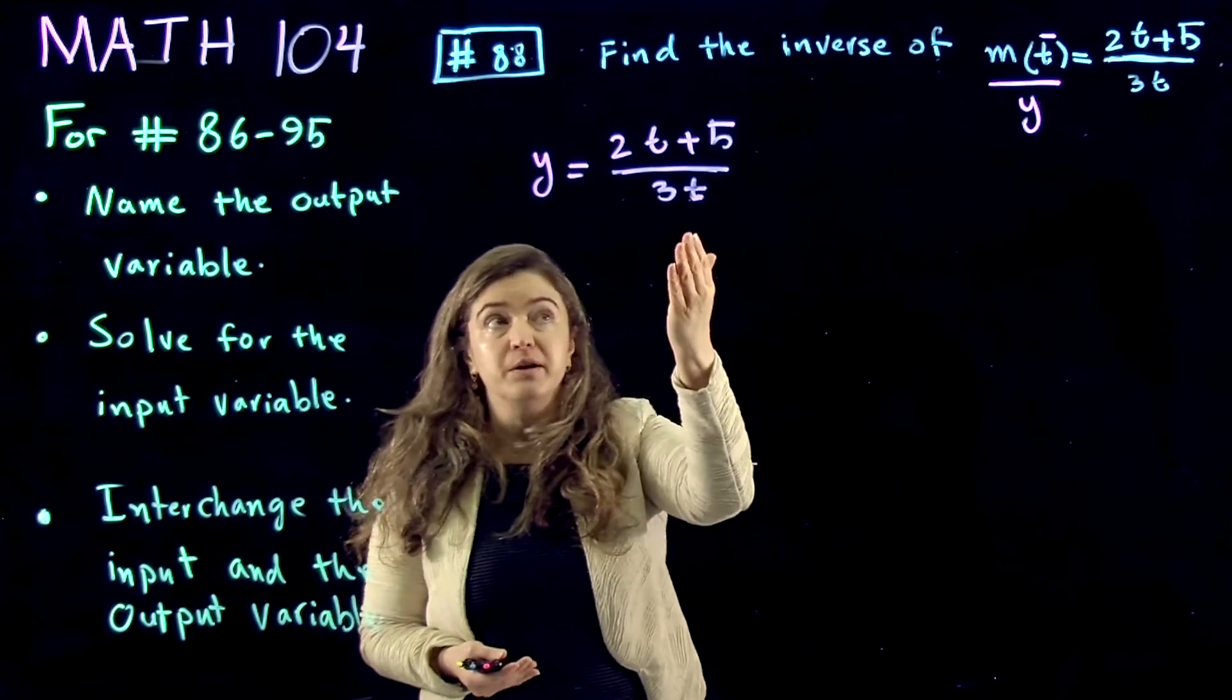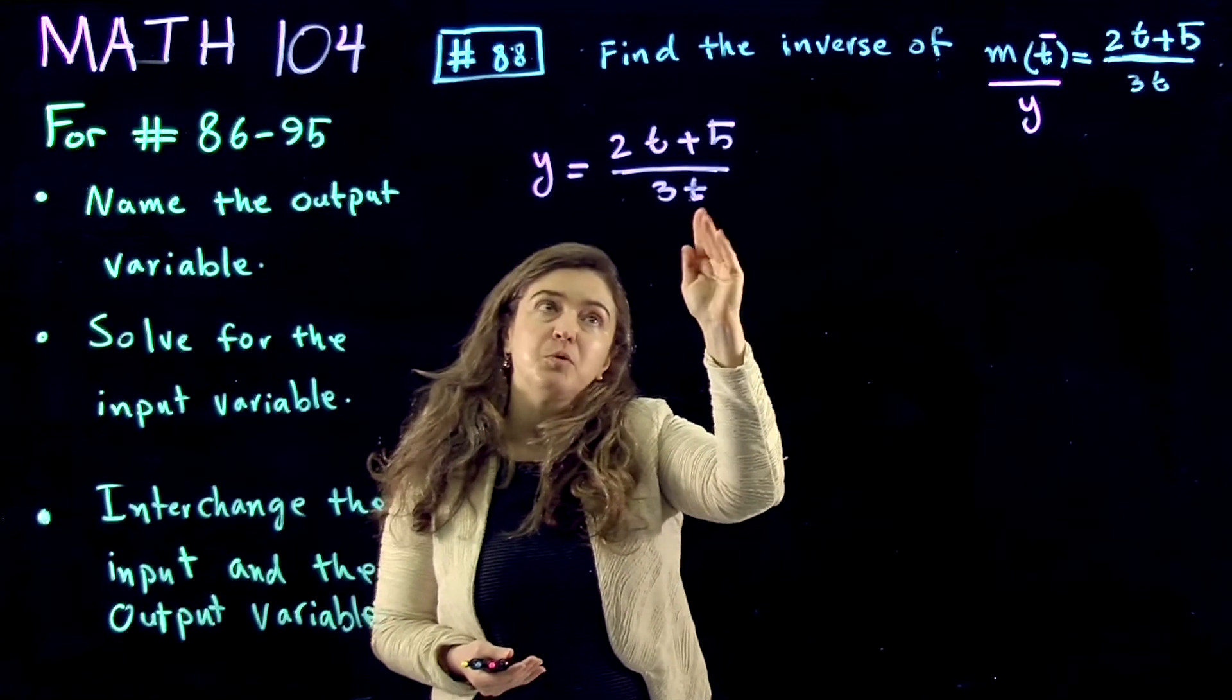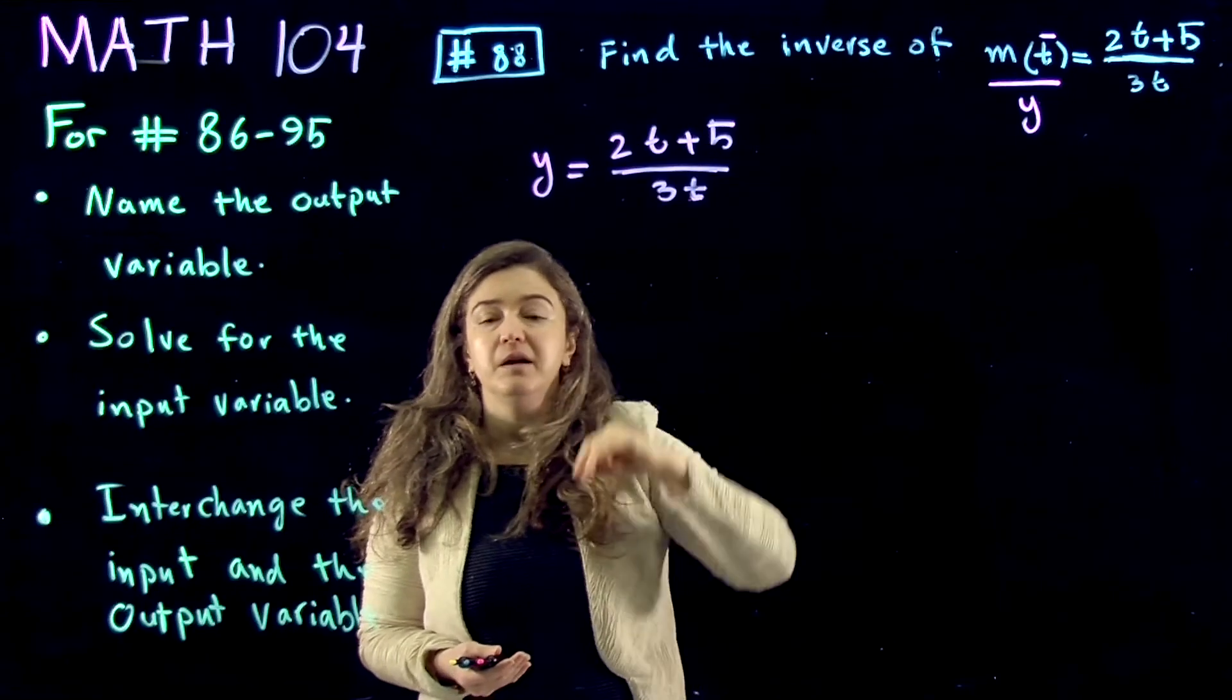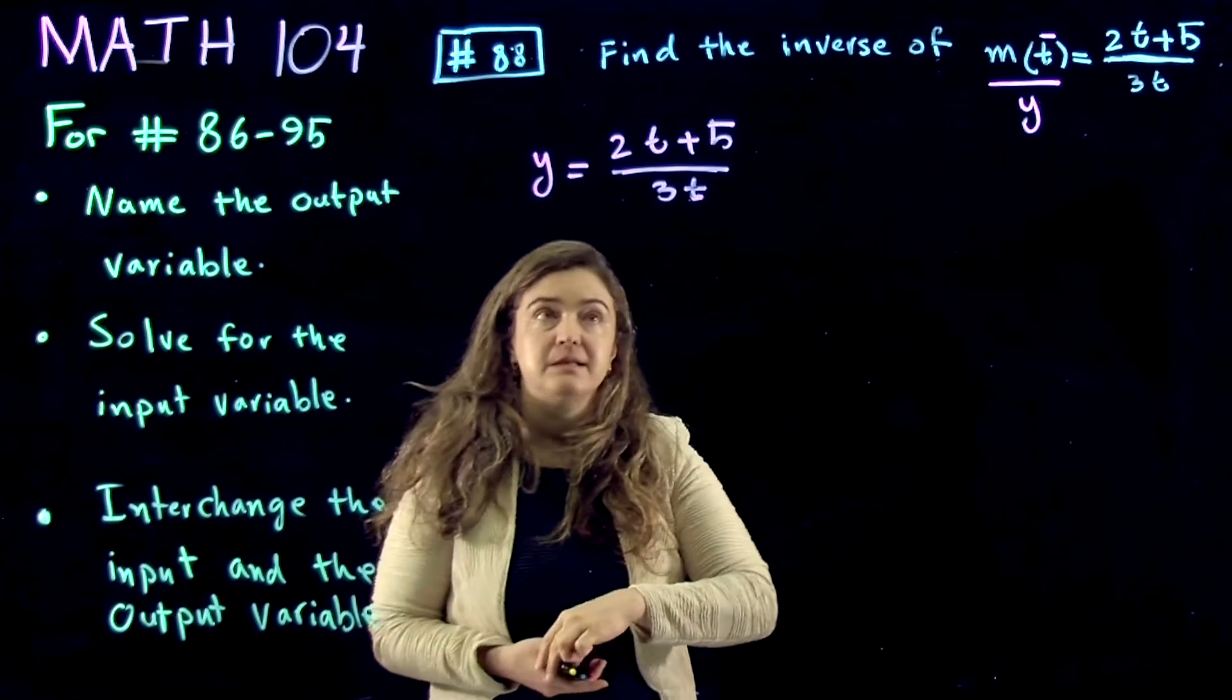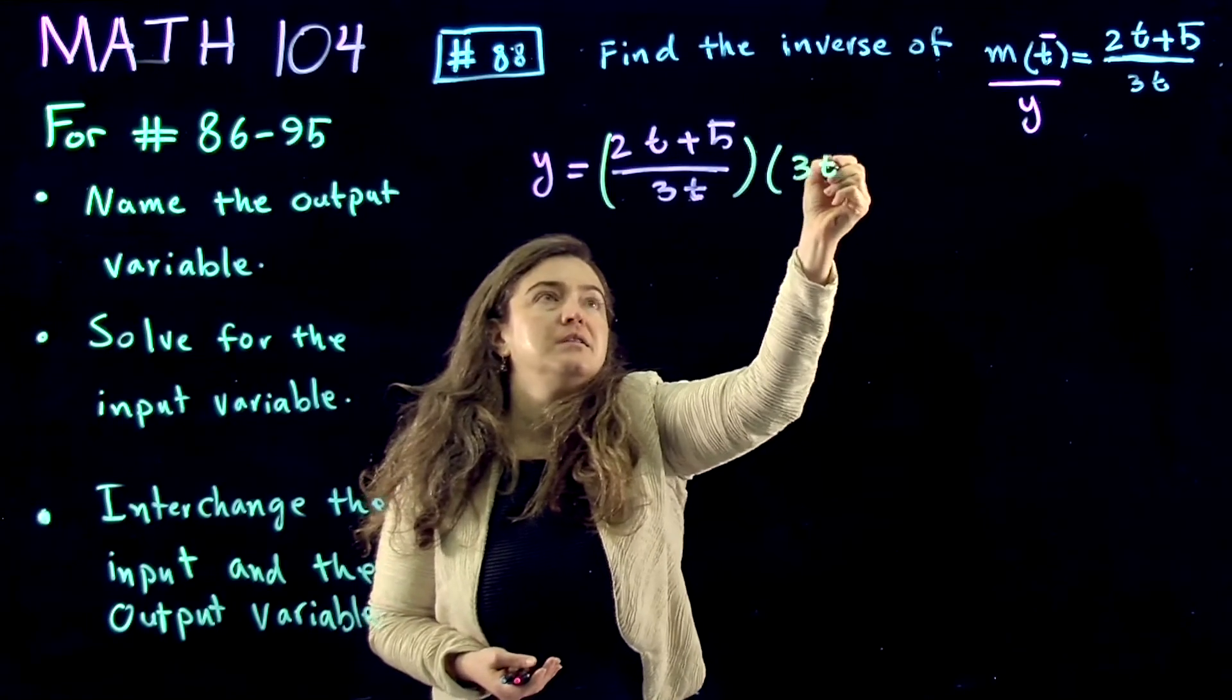We know that the first thing we want to do is isolate t, therefore we want to multiply both sides so that we can get rid of the denominator. So we multiply both sides by 3t.